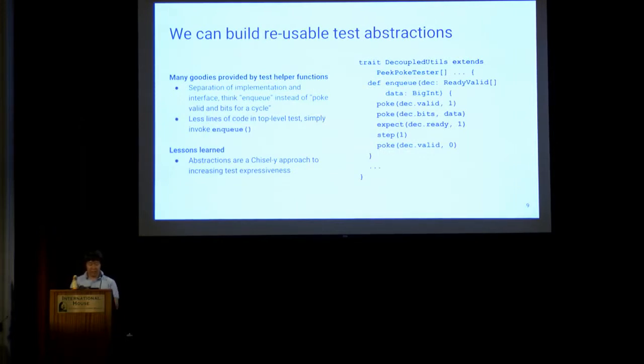Since GCD takes in a decoupled interface, one thing we can do is write test helper functions. So here you can see enqueue for decoupled that encapsulates the IO details. This separation of implementation and interface allows test writers to think at a higher level of abstraction, almost at a transactional level, instead of in terms of peeking or poking bits. This results in fewer lines in the top-level tester. For example, a call to enqueue can stand in for five lines of implementation. This meshes pretty well with the Chisel philosophy, where we enable users to build up and reuse test abstractions instead of aiming for the elusive magical full automation.